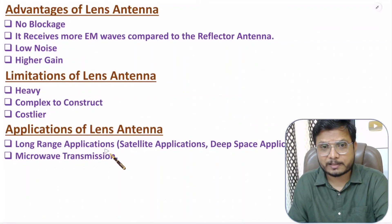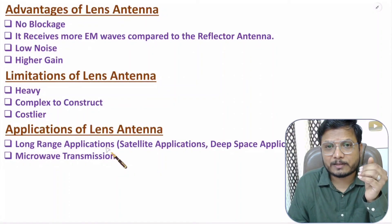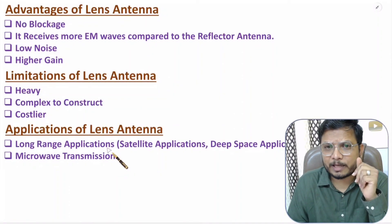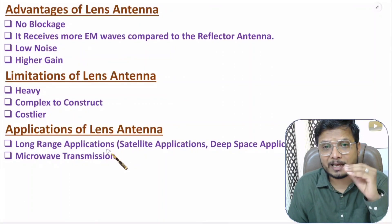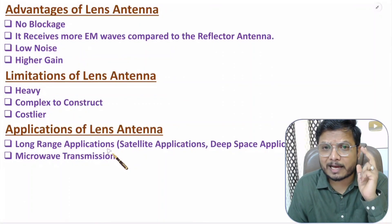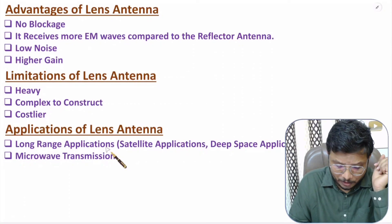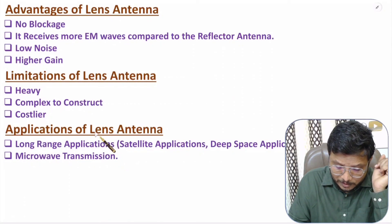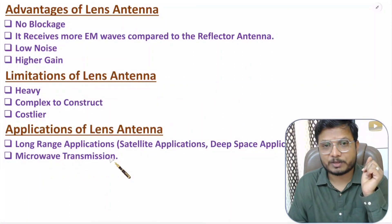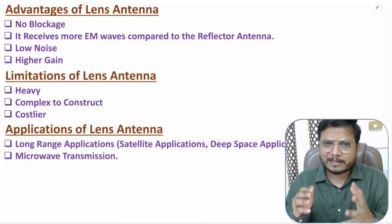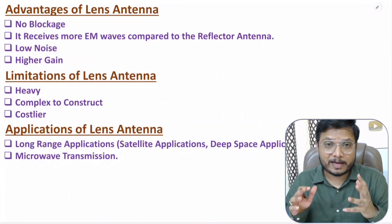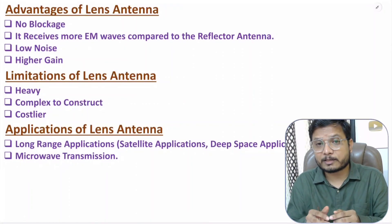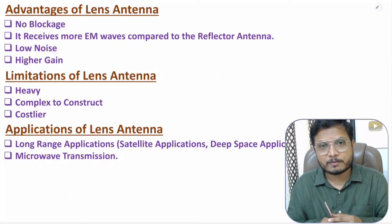Applications of lens antenna include long range applications like satellite applications and deep space applications. Lens antenna is a highly directive antenna, so it is suitable for long range applications. We can also use lens antenna for microwave transmission. I hope you have enjoyed this session — if you have any questions, note them in the comment section. Thank you for watching.